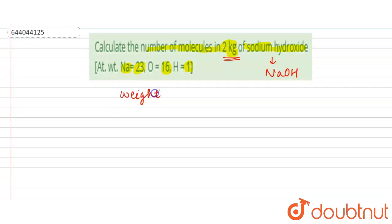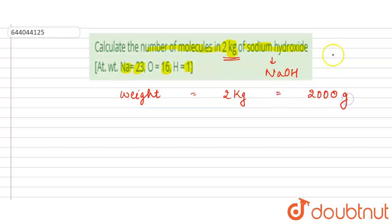We will convert the weight to grams. Since 1 kilogram is equal to 1000 grams, 2 kilograms equals 2000 grams.